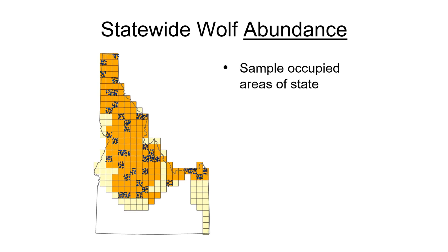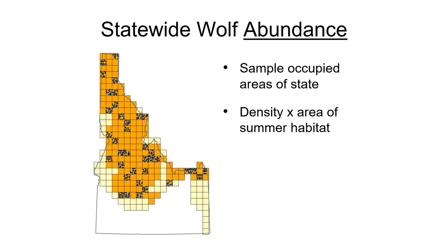This occupancy modeling also allows us to focus our abundance monitoring in the primary areas occupied by wolves. We need a higher number of wolf detections to estimate abundance, so we put clusters of abundance cameras in randomly selected cells within the occupied portion of the state. These abundance cameras are deployed at random locations within summer wolf habitat and are aimed at a potential wolf travel corridor at that location, like a trail or lightly used road. We use the resulting average wolf density from the space-to-event model and the acreage of predicted summer wolf habitat within the occupied portion of the state to produce the statewide abundance estimate.